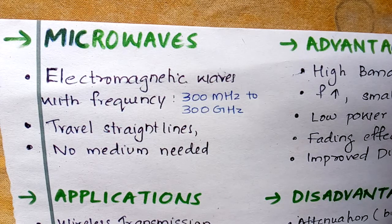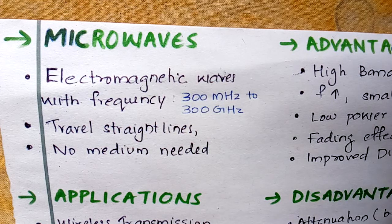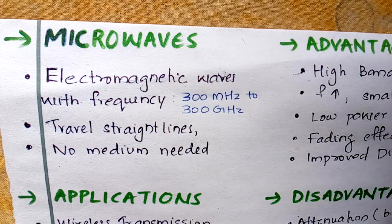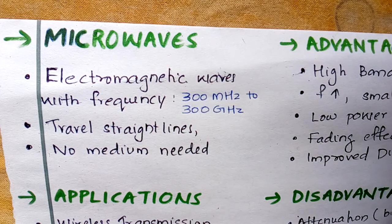First of all, you should remember the frequency range: microwaves are electromagnetic waves with frequency 300 megahertz to 300 gigahertz. Don't forget — 300 megahertz to 300 gigahertz. They travel in straight lines and no medium is needed.